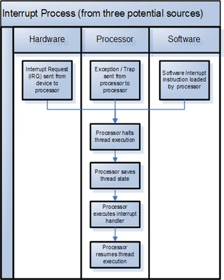Interrupts can be categorized into different types. A maskable interrupt is a hardware interrupt that may be ignored by setting a bit in an interrupt mask register's bit mask. A non-maskable interrupt is a hardware interrupt that lacks an associated bit mask, so that it can never be ignored. NMIs are used for the highest priority tasks such as timers, especially watchdog timers.